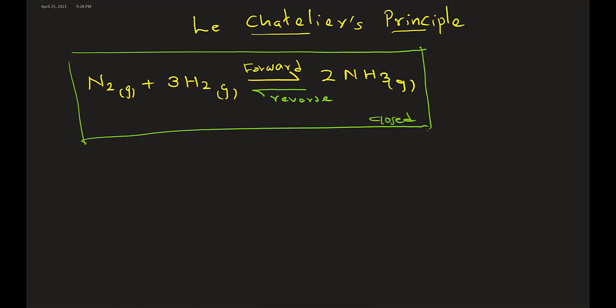So this has to be a closed system in order to reach equilibrium. Open system, something is going to disappear, no equilibrium reached, right?